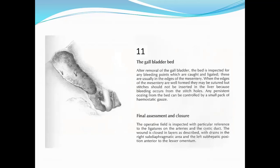The gallbladder bed: after removal of the gallbladder, the bed is inspected for any bleeding points, which are caught and ligated. These are usually in the edges of the mesentery. When the edges of the mesentery are well formed, they may be sutured, but stitches should not be inserted in the liver substance because bleeding occurs from the stitch holes. Any persistent oozing from the bed can be controlled by a small pack of hemostatic gauze.